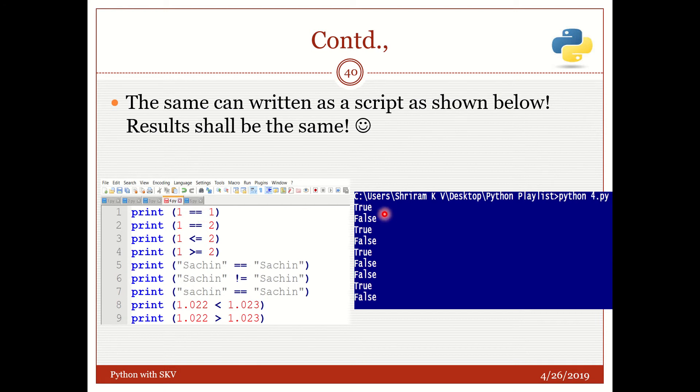Print 1 equal to equal to 1. So what is it, is it true or false? True. So I've got a True here. Print 1 equal to equal to 2. Is it true or false? Certainly false. So False is here. 1 less than or equal to 2, it's true. Yes, True. 1 greater than or equal to true, that's false.